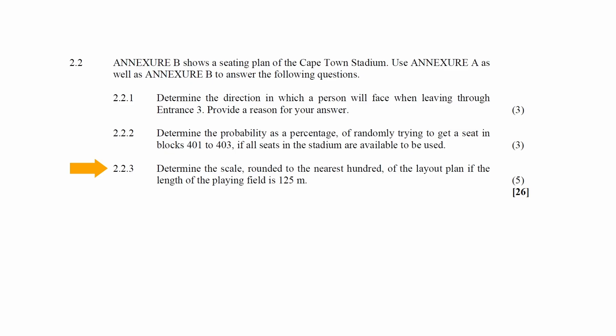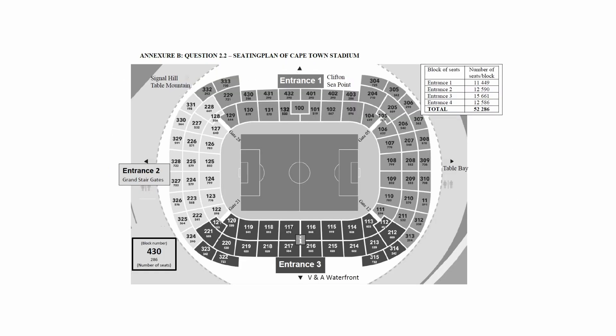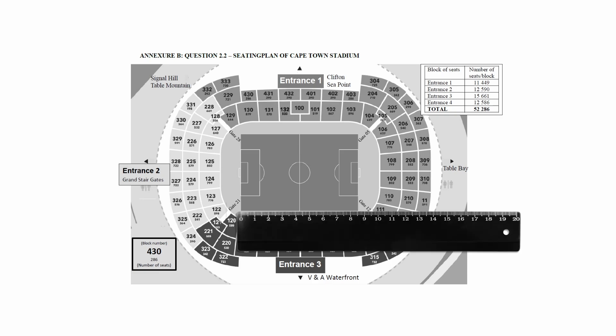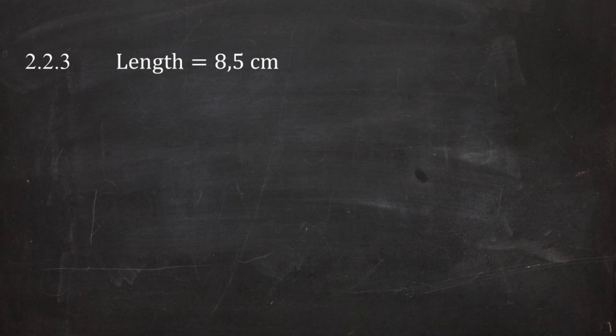In Question 2.2.3 you are instructed to determine the scale of the layout plan, rounded to the nearest hundred, given that the length of the playing field is 125 meters. The first step is to determine the map length of the playing field in centimeters. Using a ruler, the length of the playing field on the map is measured to be approximately 8.5 centimeters. This means that 8.5 centimeters on the map equals 125 meters in reality.